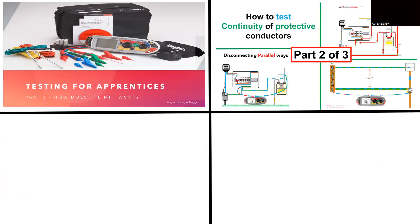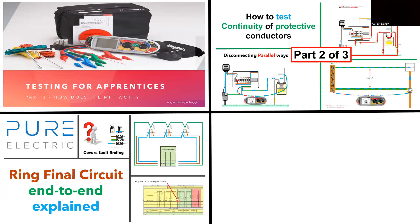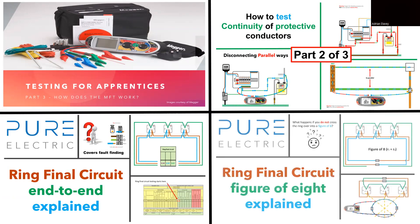If you haven't seen them already, I highly recommend watching my videos on how the low ohm resistance tester works, how to test continuity of protective conductors, testing ring final circuits end to end, and ring final circuit figure of 8 explained. These will greatly enhance your understanding of this video, fault finding, and the inspection and testing process as a whole. When you truly grasp inspection and testing, you also comprehend fault finding, as dead testing is a process of identifying potential faults within an electrical installation before you switch it on. You can access my inspection and testing playlist with a link in the corner of the screen.